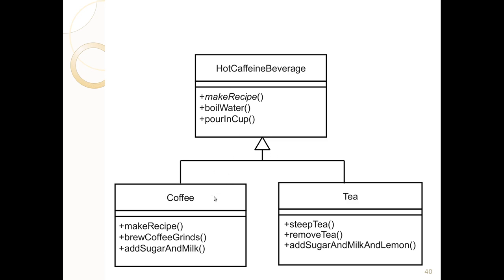We could generalize. What we could do is make a hot caffeinated beverage class that is a template method class, and it contains the make recipe, the boil water, and pouring in cup. So the coffee could have make recipe, brew coffee grinds, and add sugar and milk. They could both inherit the general recipe as well as the boiling water and pouring in cup methods from the hot caffeine beverage.